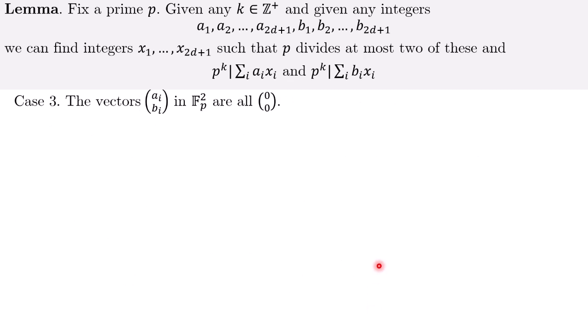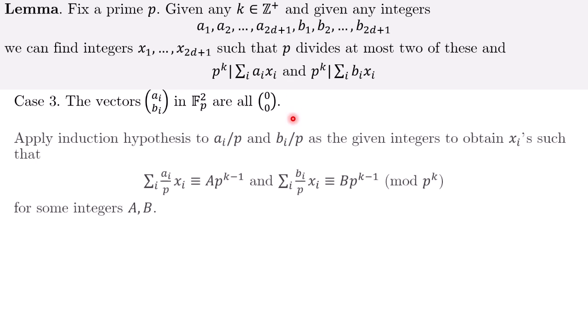And last case, the last case is where the vectors aixi are all equal to (0,0). So very similar argument, we apply induction hypothesis to ai/p, bi/p as given integers, obtain xi such that we can write it in this form. And this time, we don't even need to modify anything because move the factor of p over, we see that sum aixi is already congruent 0, sum bixi congruent 0 mod pk. So there's no modification needed for this case.